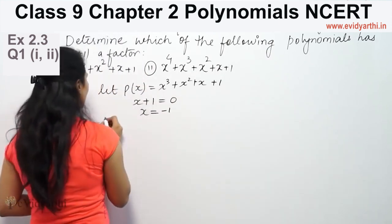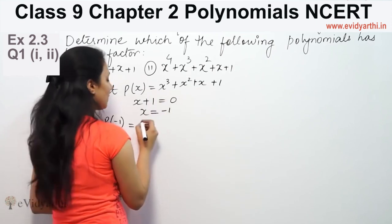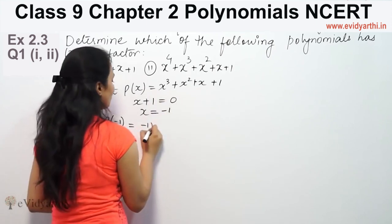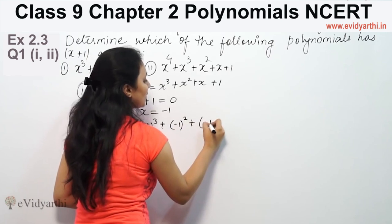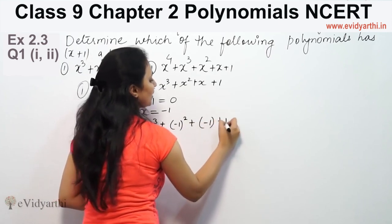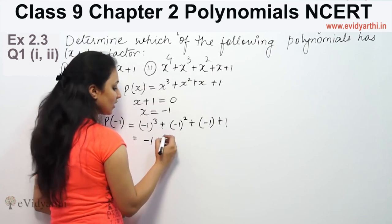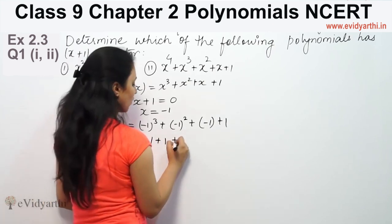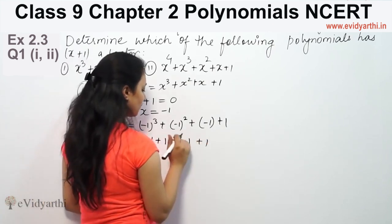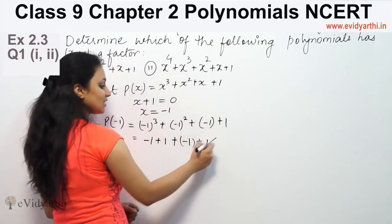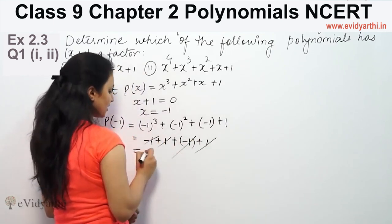We substitute x equals minus 1 into the polynomial: minus 1 cubed plus minus 1 squared plus minus 1 plus 1. Minus 1 cubed is minus 1, minus 1 squared is plus 1, then minus 1 plus 1. The positive and negative terms cancel out, giving us 0.